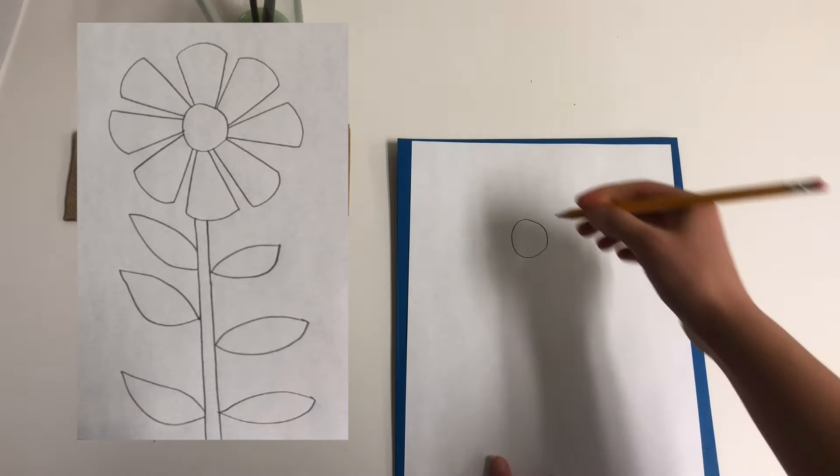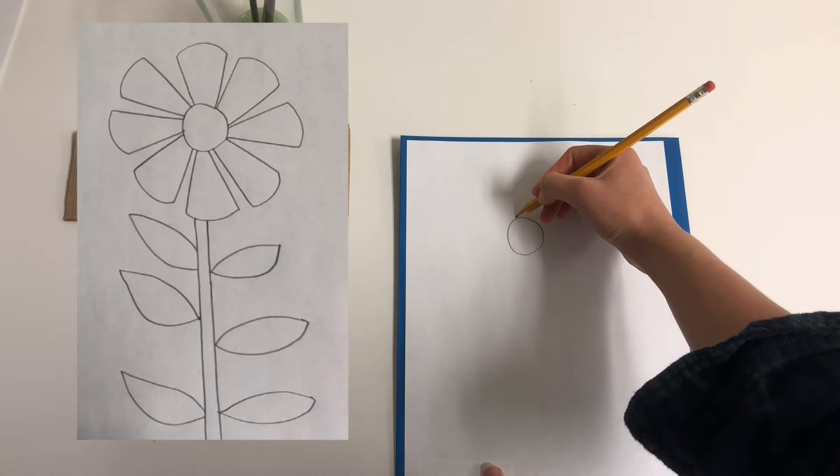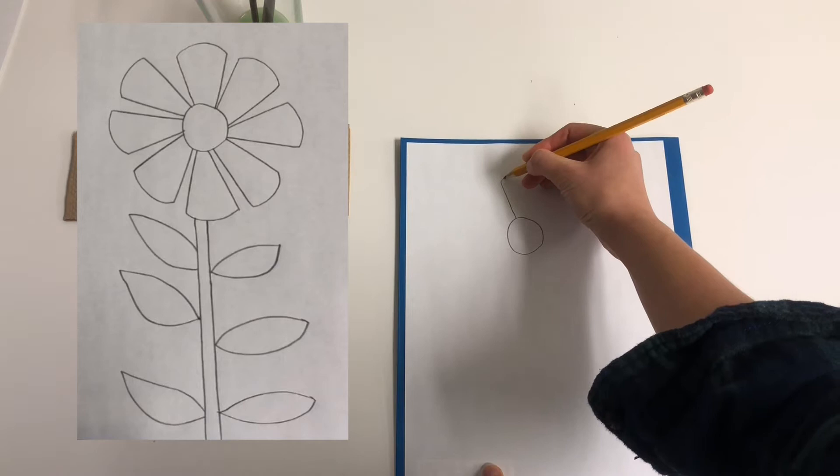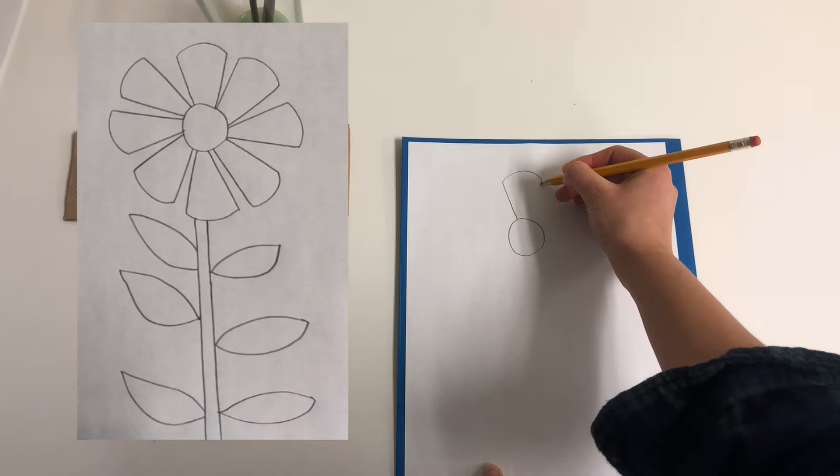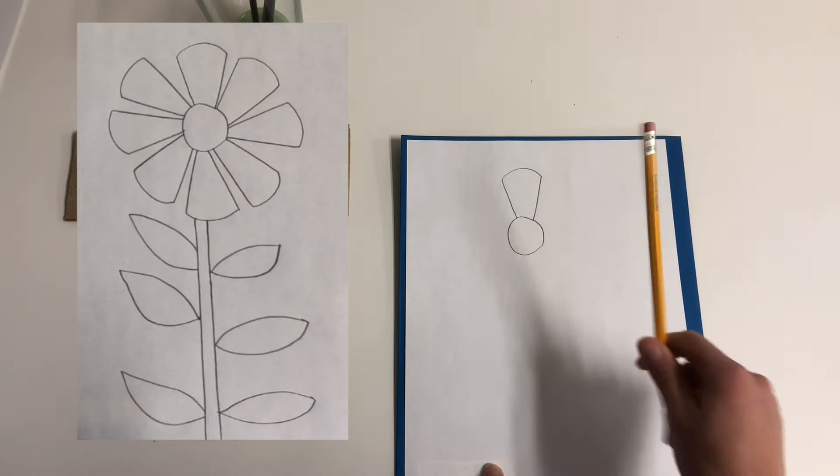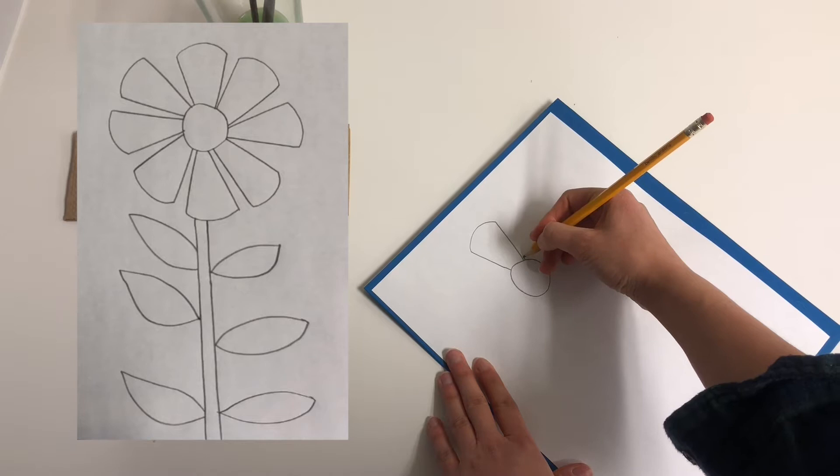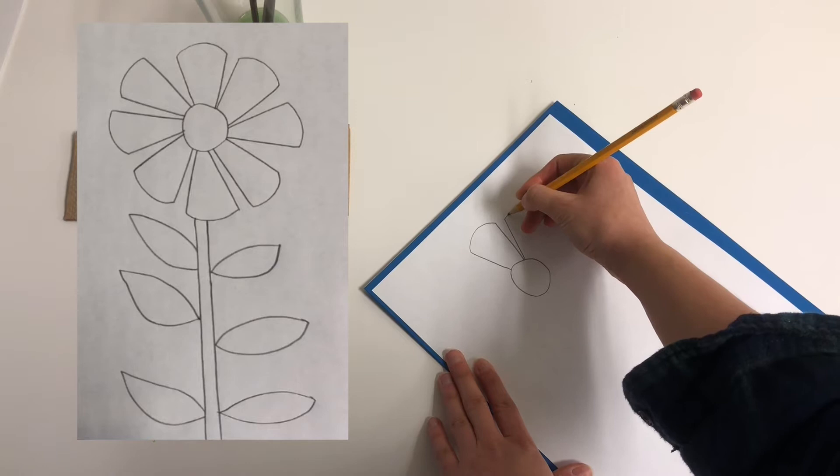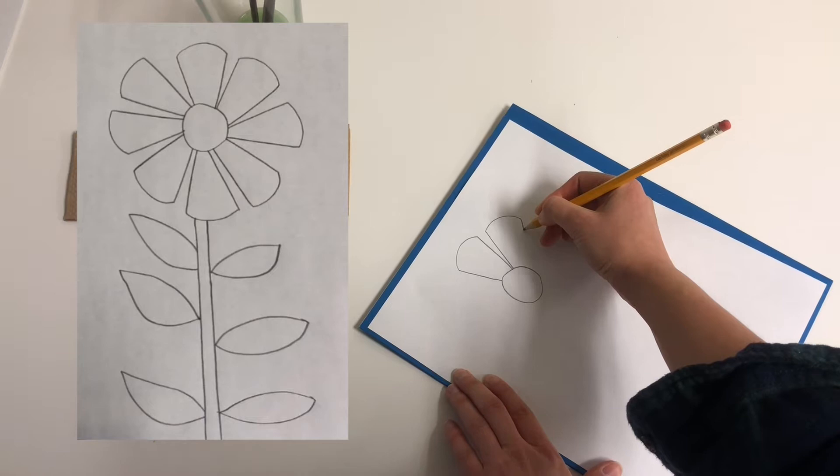The next step I'm going to do is start to make some petals. Now all of these petals are going to be very similar. We are going to have an angled line coming off of the circle, and then an arch shape, just like a rainbow, and another straight line coming down, angling in. Now I am going to repeat that all the way through. If you need to rotate your paper as you make your petals, you can do that. So an angled line with a little bit of space in between, an arch like a rainbow, and a straight line coming down.